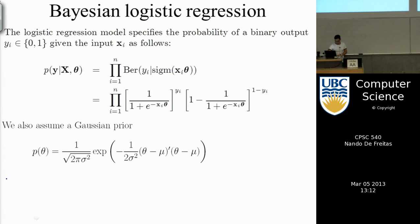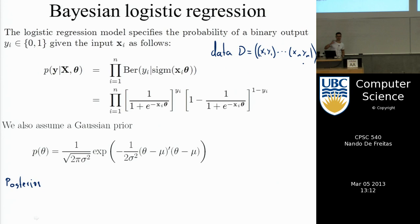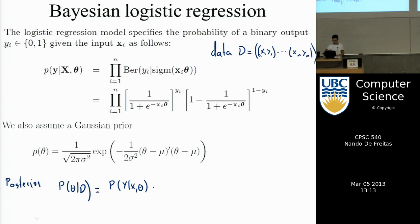I'll call the data D — all x_1, y_1 through x_n, y_n pairs. The posterior, p of theta given all training data, equals the likelihood p of y given x and theta, times the prior, divided by p of y to normalize it. However, we won't be able to normalize it — when you multiply the likelihood and prior and try to integrate out theta, that integral is intractable.